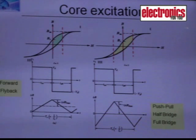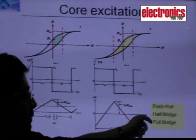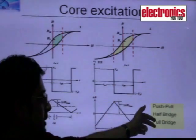The topologies which use asymmetrical converters are forward and flyback. And symmetrical converters are push-pull, half bridge, and full bridge.